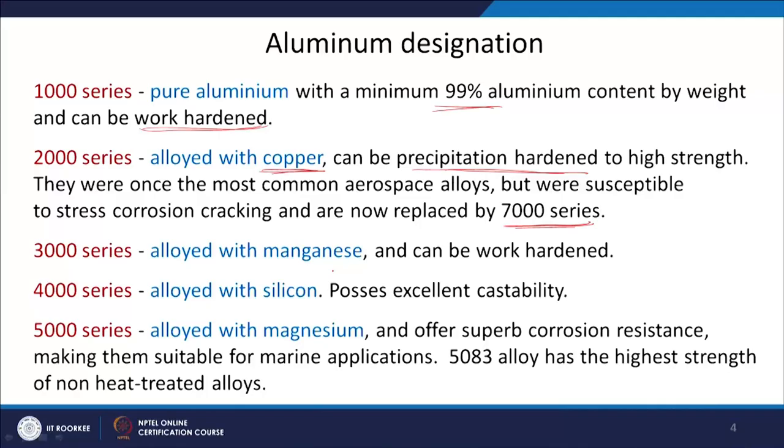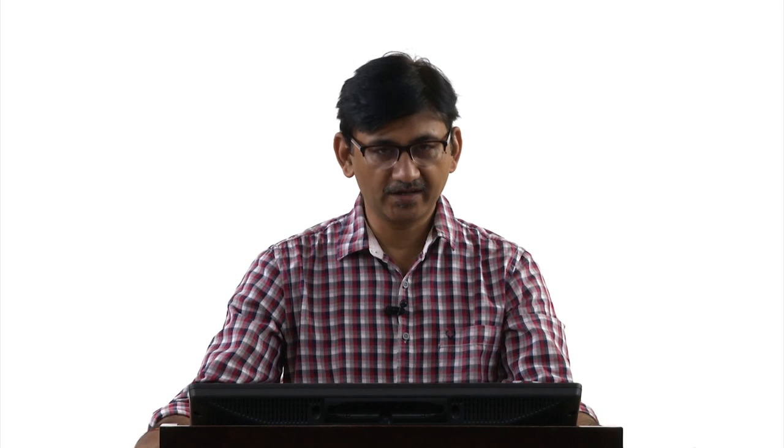The 3000 series is alloyed with manganese; manganese goes into solid solution so these alloys can be work hardened. The 4000 series adds silicon into aluminium, and these are very important alloys because they provide very good castability — you can cast them easily. They are used for making cylinder heads, which have complex shapes with fins for cooling that must be cast, requiring good flow ability to fill those mold shapes.